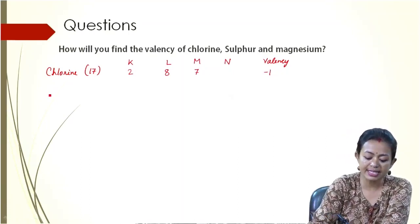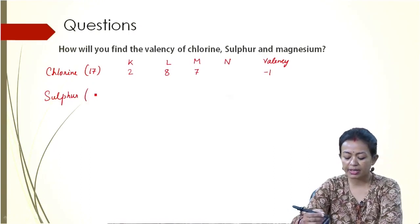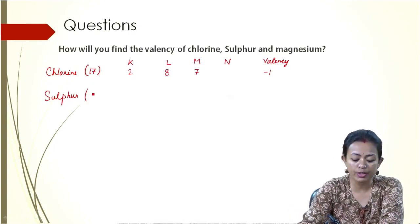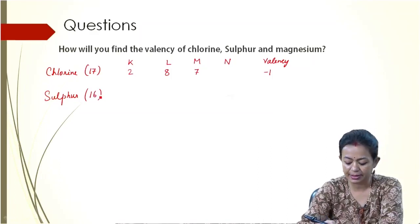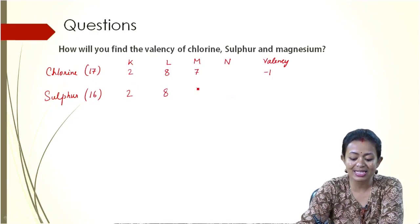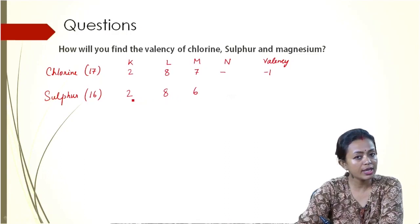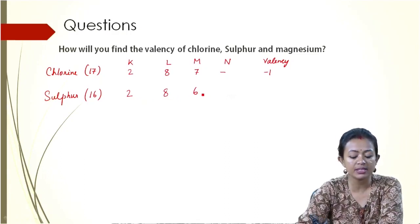Similarly, let us take Sulfur. What is the number of electrons for Sulfur? It is 16. So in case of Sulfur it is 2, 8, and 6. Now again you see first shell completed, second shell completed, third shell running short of 2 electrons.